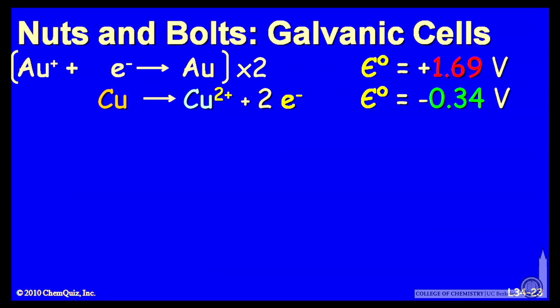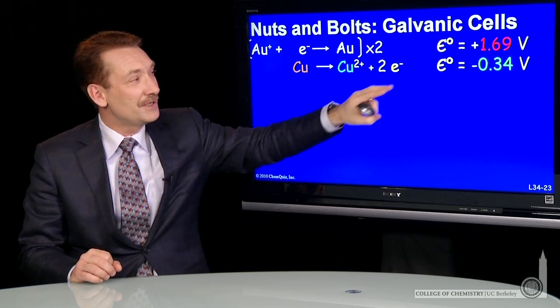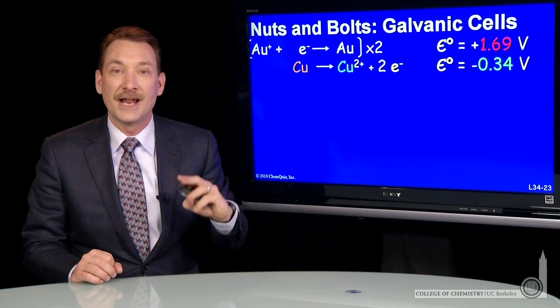Now, I can add those two. But before I do, I should multiply through by 2 to make sure the number of electrons cancel and to get the stoichiometry correct. And I do that, but you'll notice when I do that, I'm not going to multiply the potential by 2.